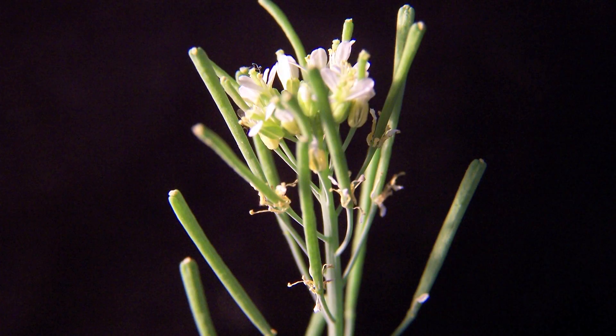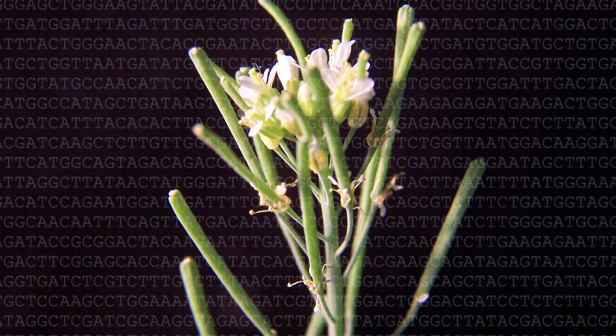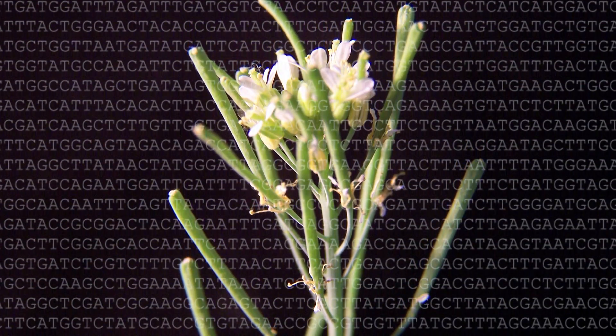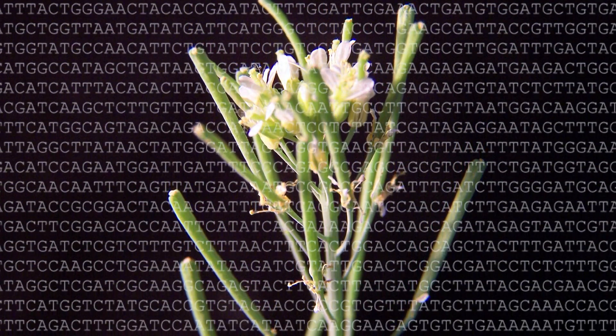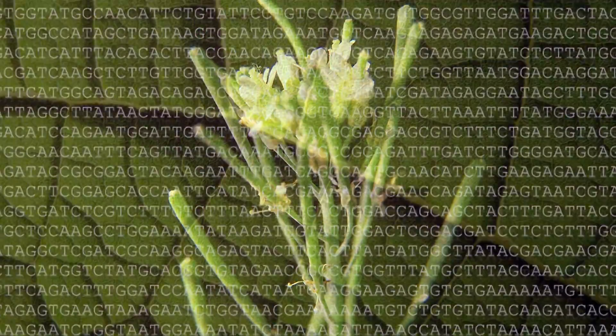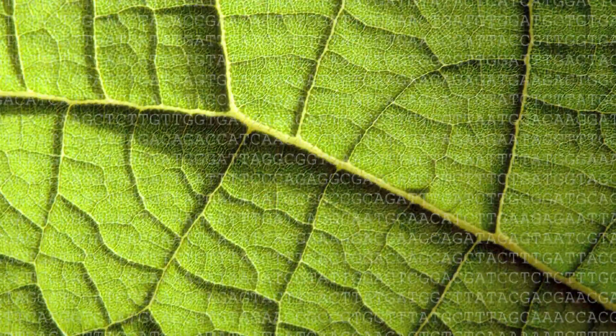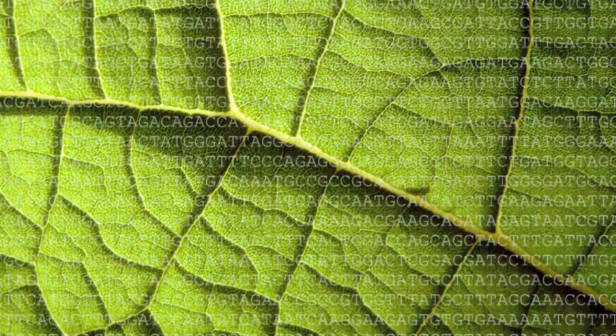The more data we get, the more we realize that it's actually a lot harder than we might have thought. We once thought that having full genome sequences from everything would just give us the tree of life right there, but it turns out the data are a lot more complicated, and evolution doesn't always happen in the ways that we might have expected.